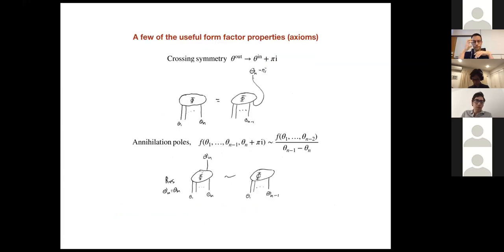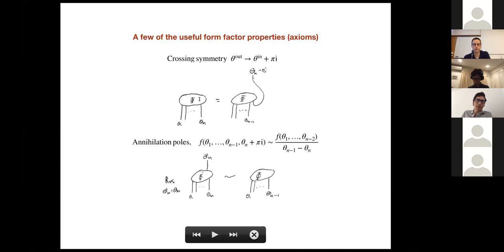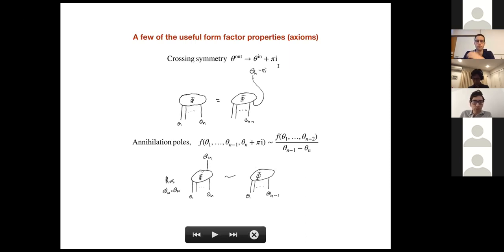Here are a few nice properties of form factors that we will need in this talk. You can draw a form factor with an operator, n incoming particles, and the vacuum as the outgoing state. A nice property in a relativistic theory is crossing symmetry: you can turn one incoming particle into one outgoing particle by shifting the rapidity.